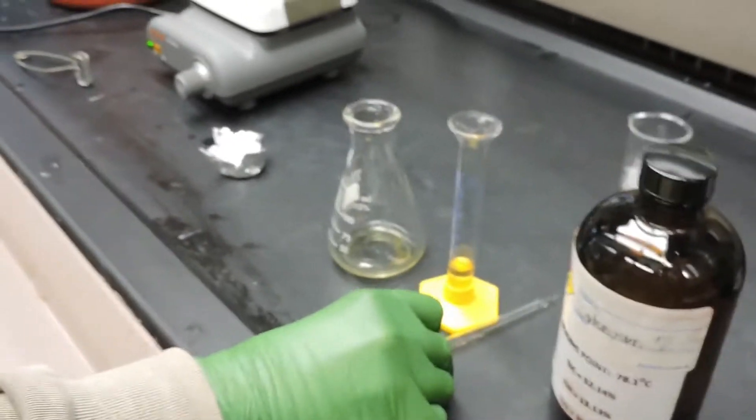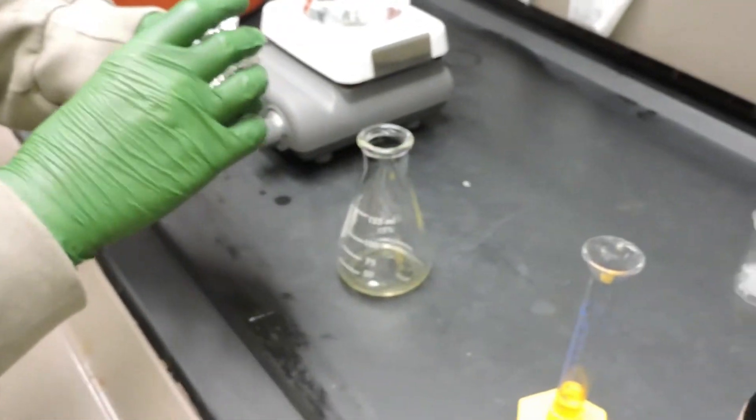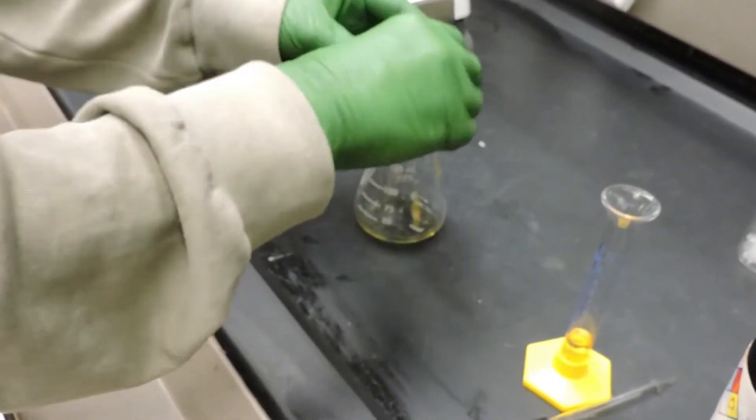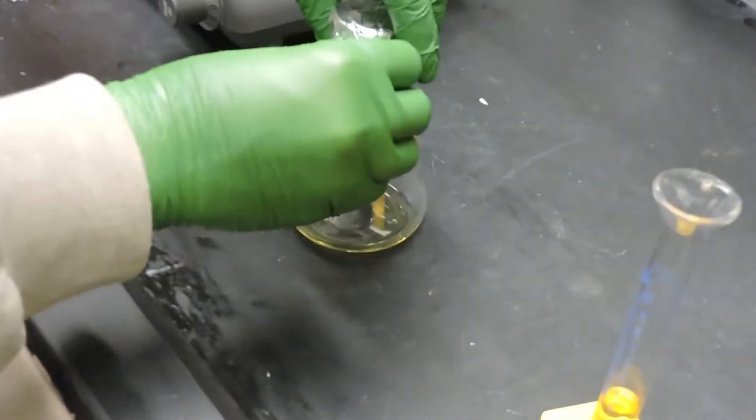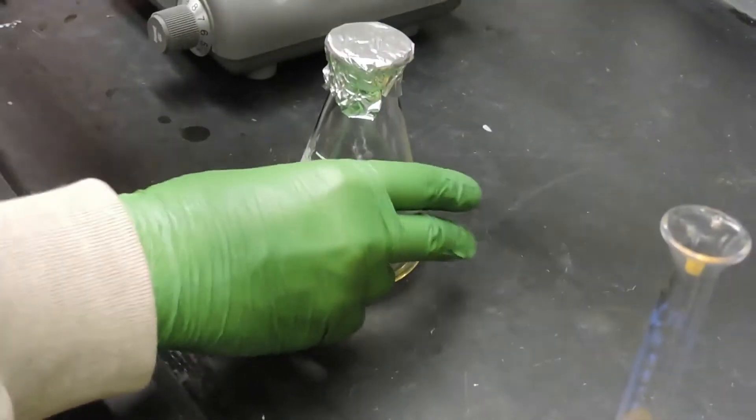Now that the unknown liquid is in the flask, we'll cover it with our aluminum foil and poke a hole in the top to release excess vapor as we heat it in our hot water bath.